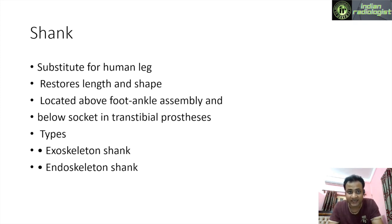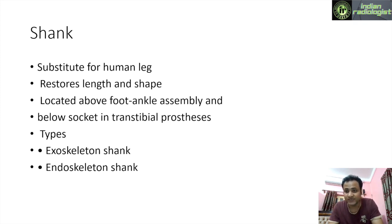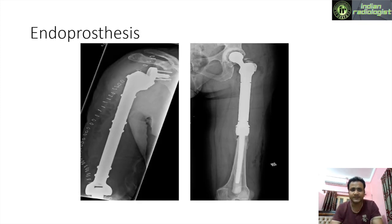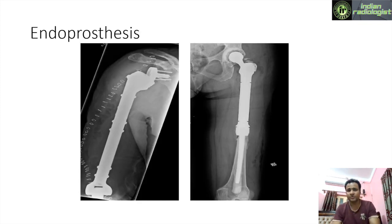What is a shank? A shank is basically a substitute for the human leg; it helps in restoring length and shape and is located above the foot-ankle assembly. It can be below the socket in the case of a trans-tibial prosthesis. There are two types of shanks: the exoskeletal shank and the endoskeletal shank.